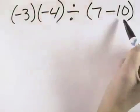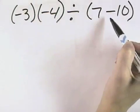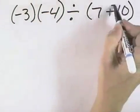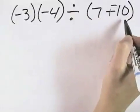We'll start with the 7 minus 10. Since it's subtraction, we'll change it to addition of the opposite. So that's 7 plus a negative 10.